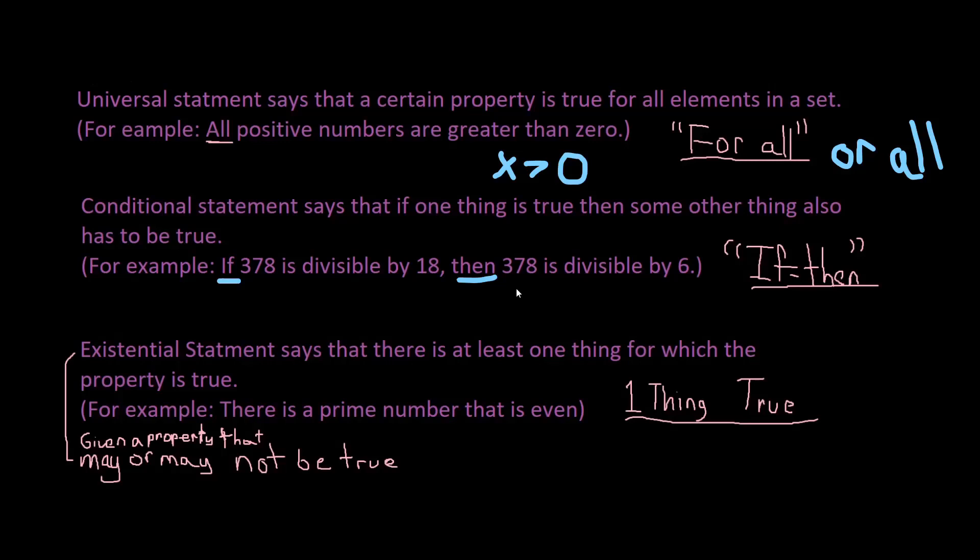So in this case, for example, the property that is being claimed is there is a prime number that is even and this is true for one number and that number is the number two. Because one times two is two and that's a prime number that is even.